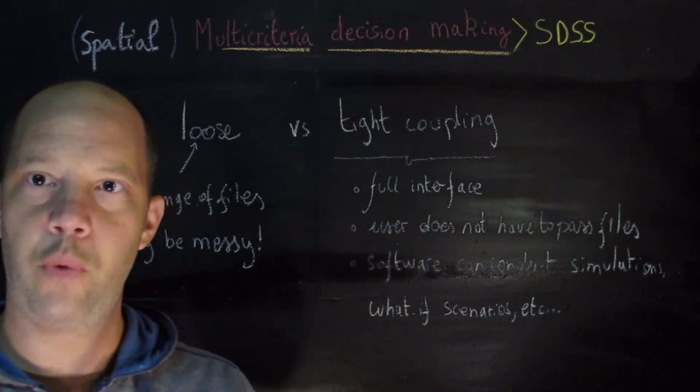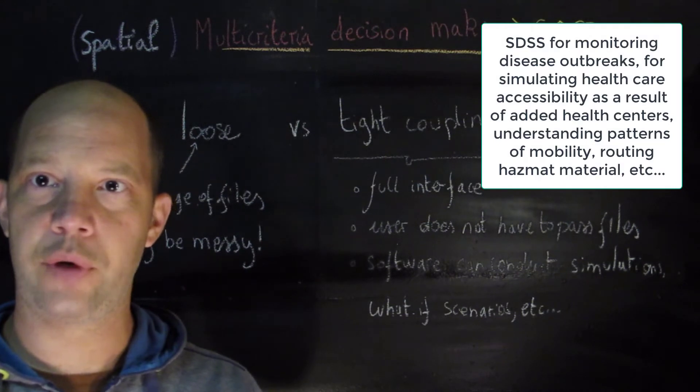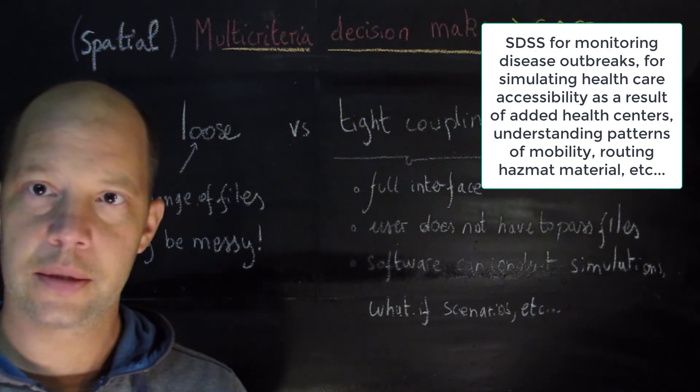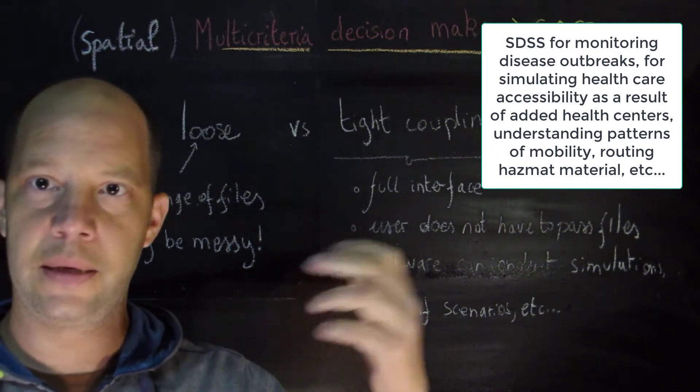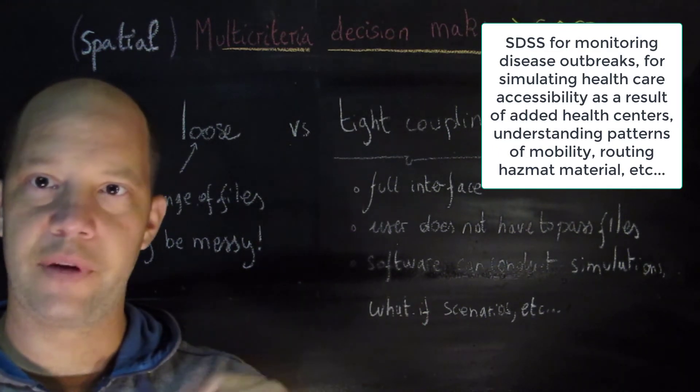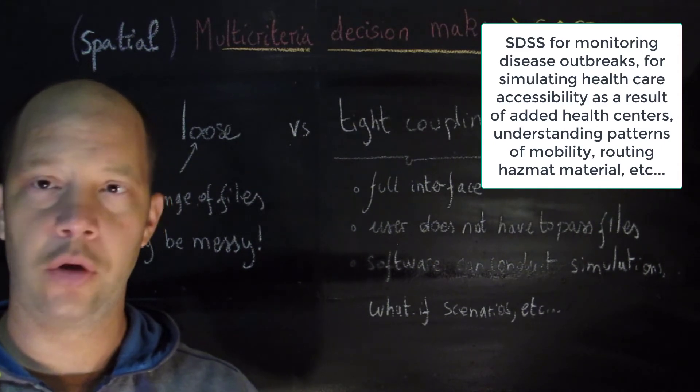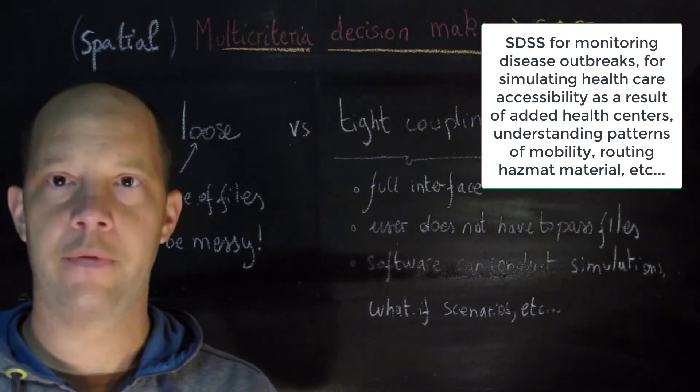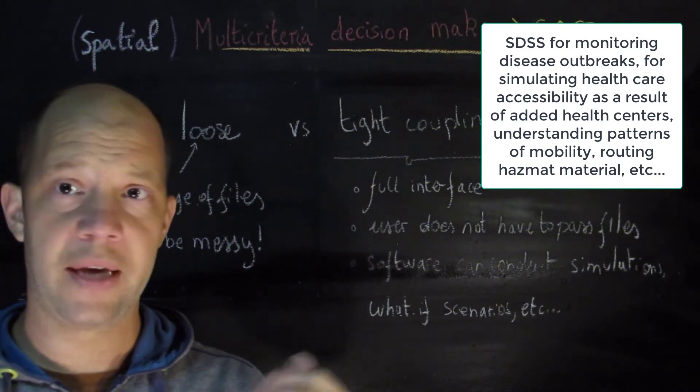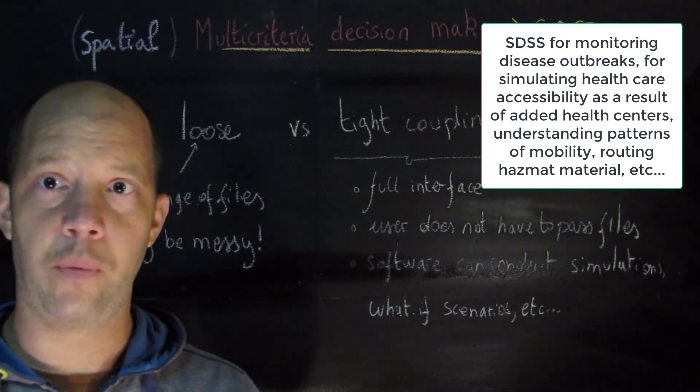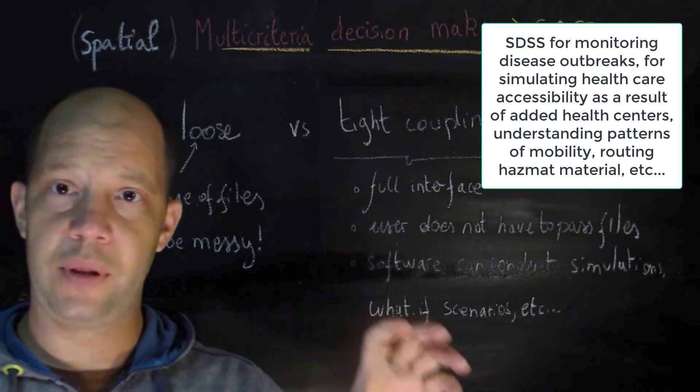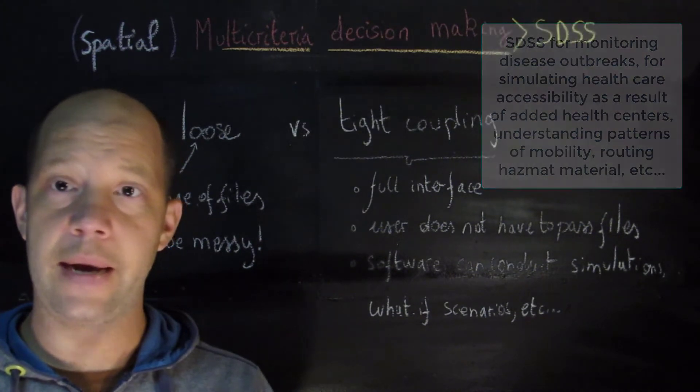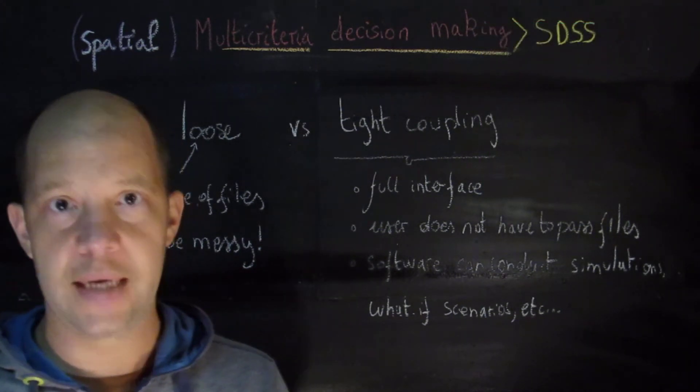For instance, we may have SDSS that are created for monitoring health outbreaks like COVID-19, Ebola and so on. You may have an SDSS that is being created to analyze statistical distribution of patients in a health context. You may have an SDSS that is being created to measure the spatial interaction between demand and facilities, for instance. So there are many different examples, and I myself have actually developed many SDSS.